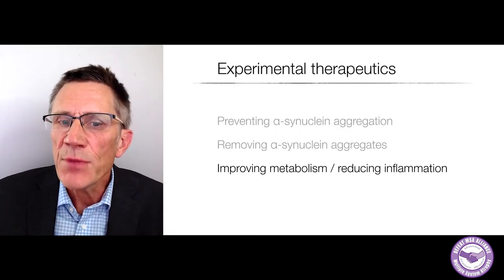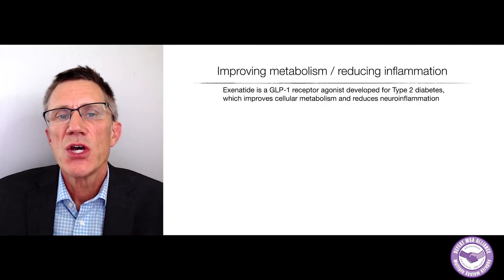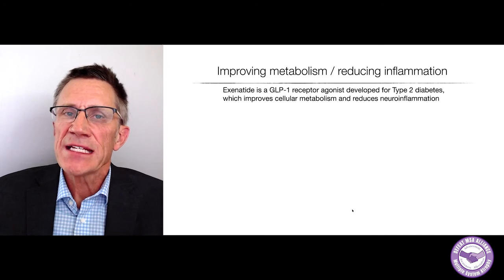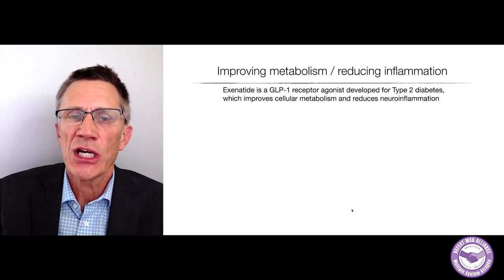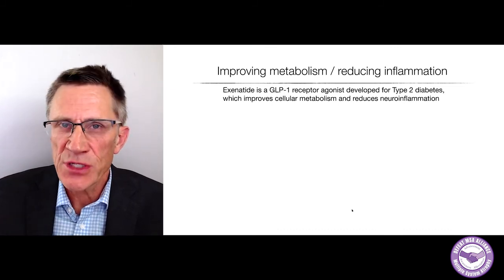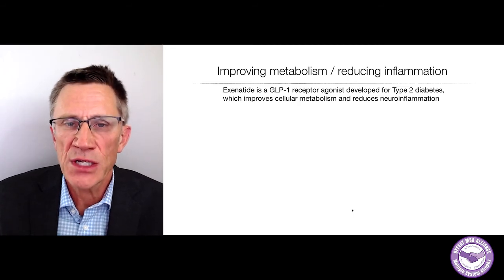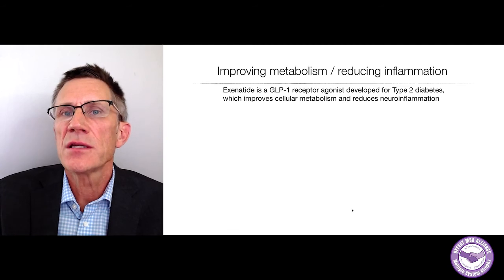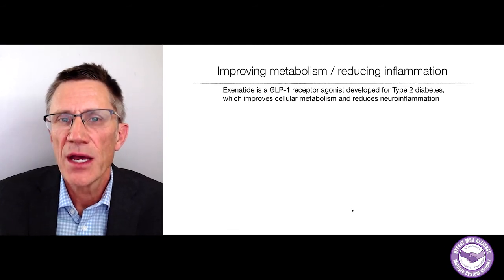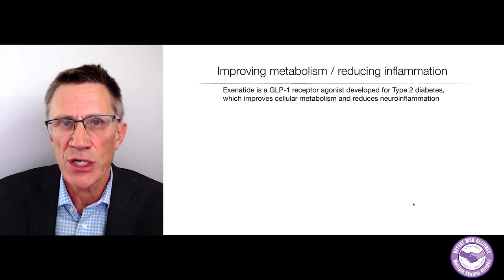Finally, let me talk about improving metabolism and reducing inflammation. There is a drug called Exenatide, which is an agonist for a receptor called GLP-1. Exenatide was developed as a drug for type 2 diabetes to improve metabolism, and we know now that it can improve metabolism in the brain and also reduce unwanted neuroinflammation.